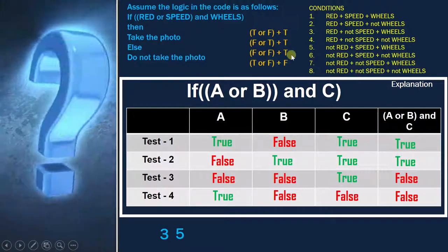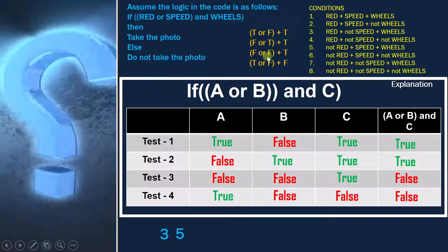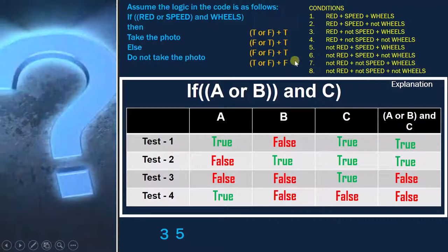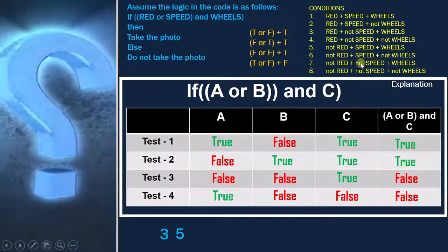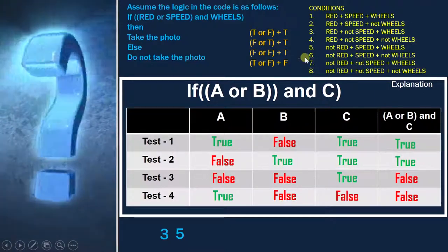Now if I see the third combination, that is false, false, true. So that is nothing but the seventh combination. False, false, and true. So I will also note down 7.